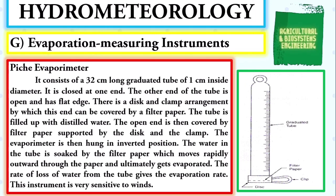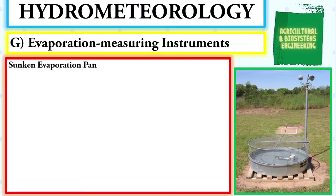Next, we proceed with the instruments used to measure evaporation. We begin with the Piche evaporometer, which consists of a 32-centimeter long graduated tube of one centimeter inside diameter, closed at one end and open at the other with a flat edge. A disc and clamp arrangement allows this end to be covered by a filter paper. The tube is filled with distilled water, covered with filter paper supported by the disc and clamp, then hung in an inverted position. Water is soaked by the filter paper and evaporated; the rate of water loss gives the evaporation rate. This instrument is very sensitive to winds.